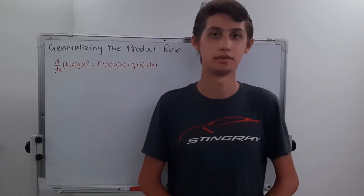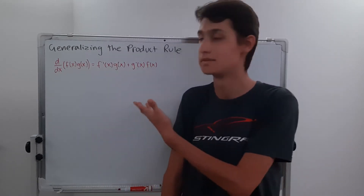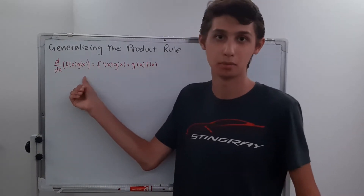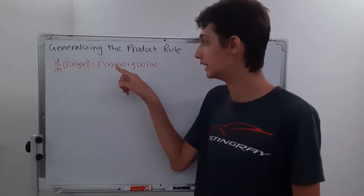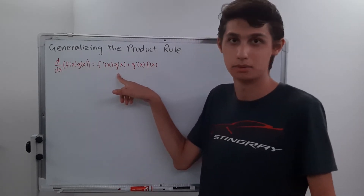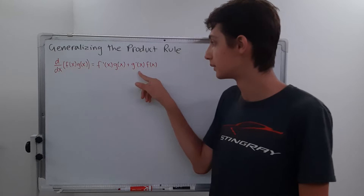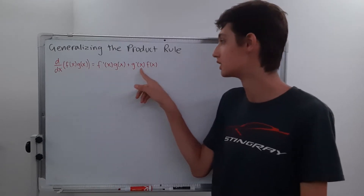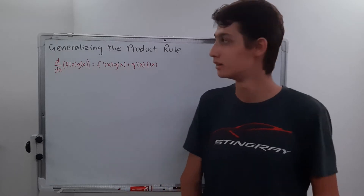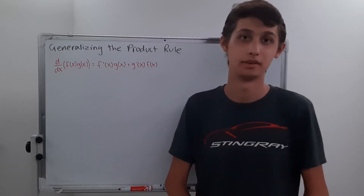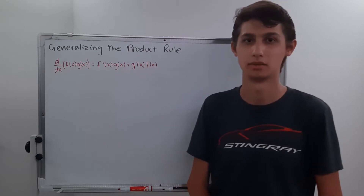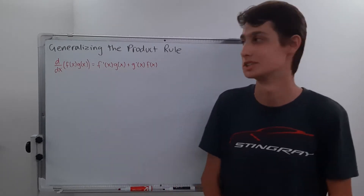If we want to take the derivative of a product of two functions, we have the product rule of differentiation. It states that the derivative of the product is equal to the derivative of the first times the second, plus the derivative of the second function times our first function. That's good, because a lot of the time we'll have the derivative of a product of two functions, but what happens if we have a product of three or four or even more functions?